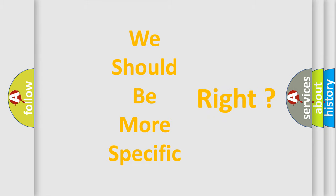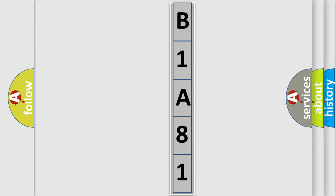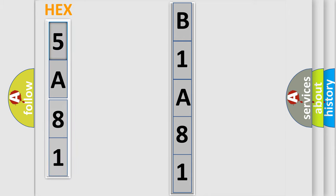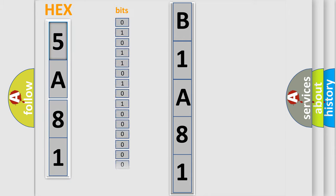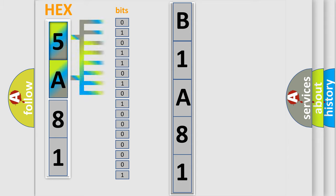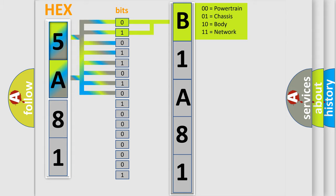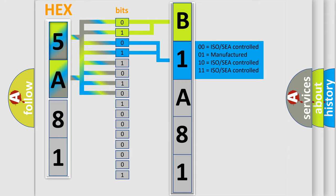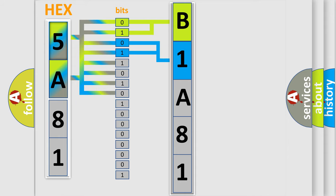The error code is split into two bytes consisting of 16 bits. One bit is the basic unit that each computer works with. The bit has two logical states: zero, low level, and one, high level. By combining the first two bits, the basic character of the error code is expressed. The next two bits determine the second character. The last bits of the first byte define the third character of the code.